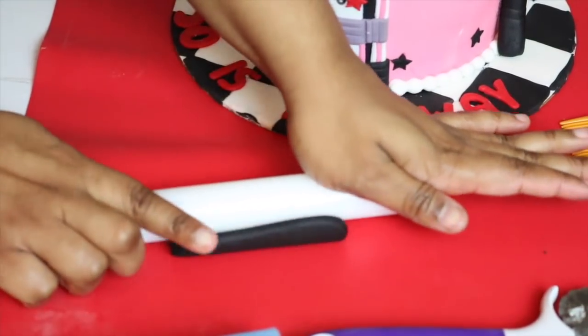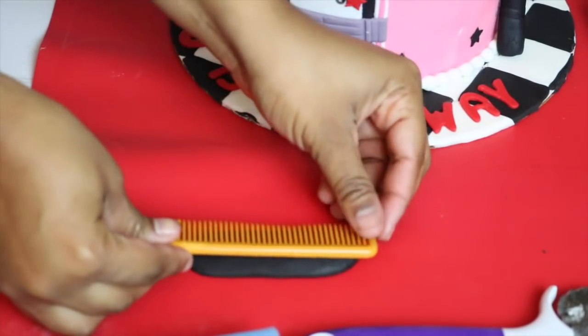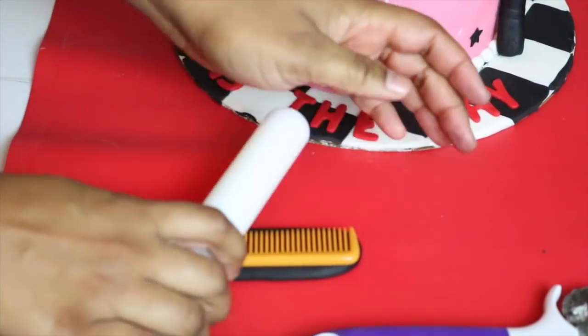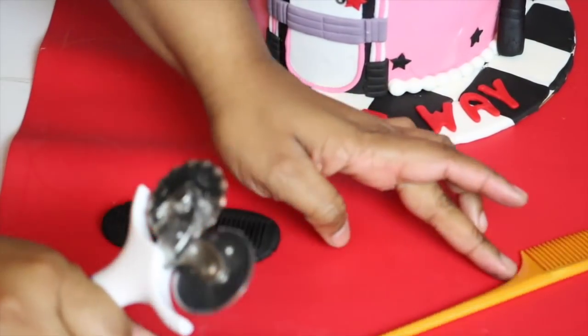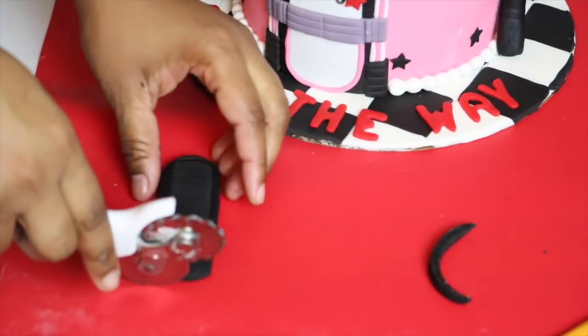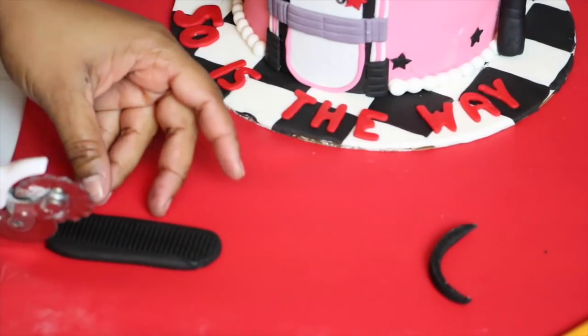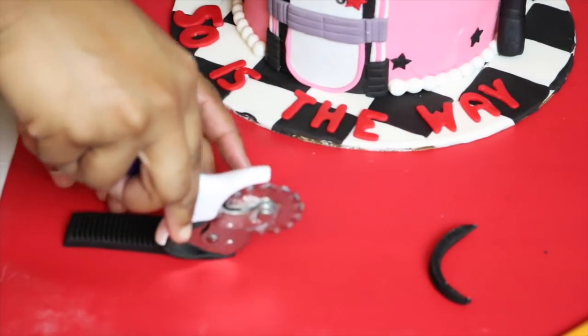And then I am going to make the signature grease comb. So I just have a little comb here that obviously I have washed and I am going to use it with a rolling pin to indent a mark on my fondant and then I am going to cut off all the excess and ta-da you have a comb.